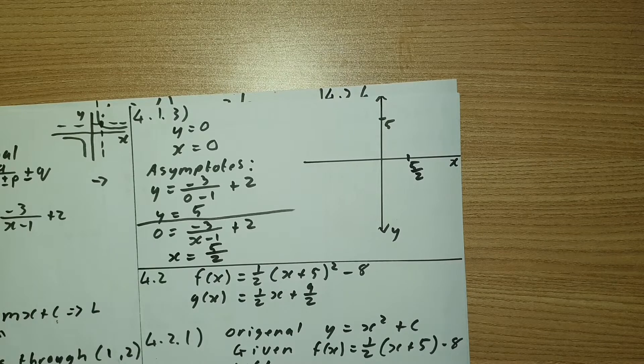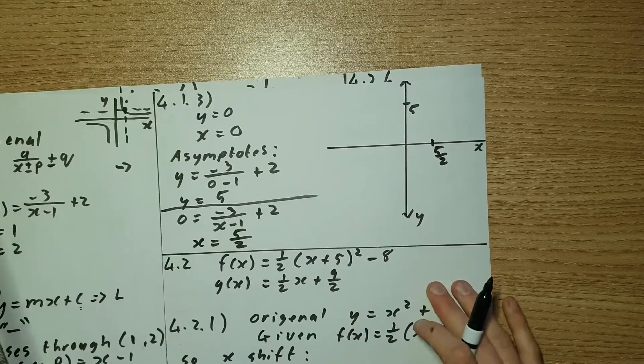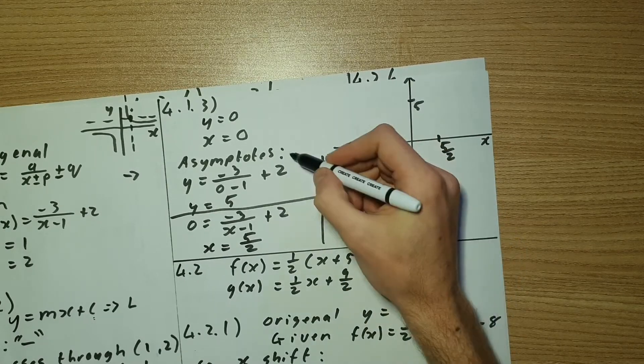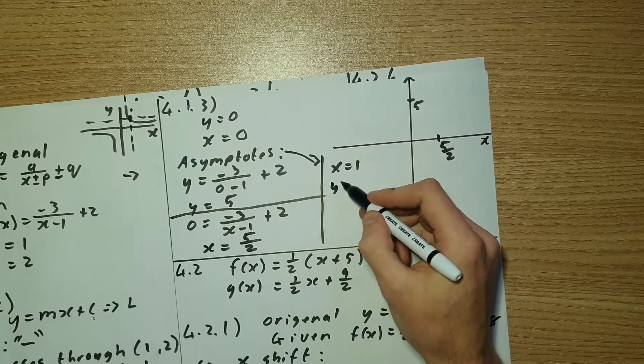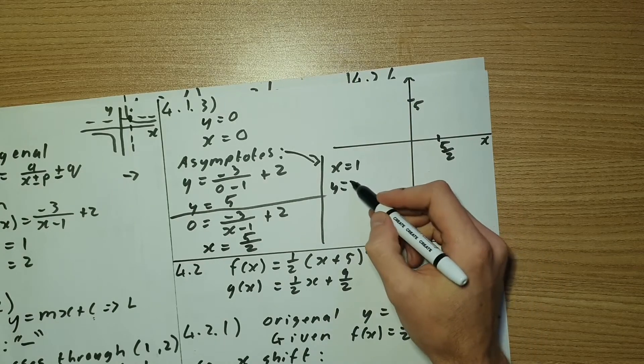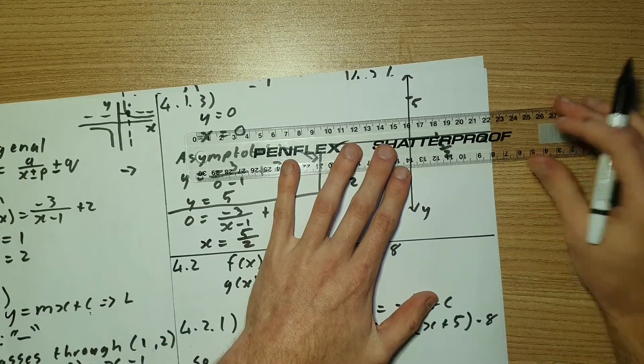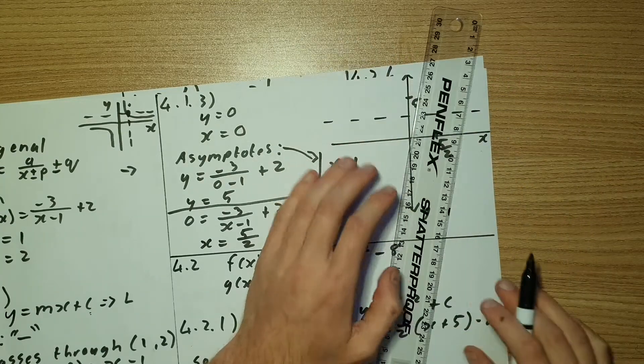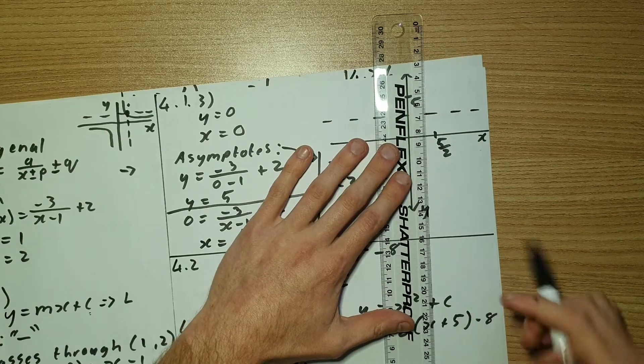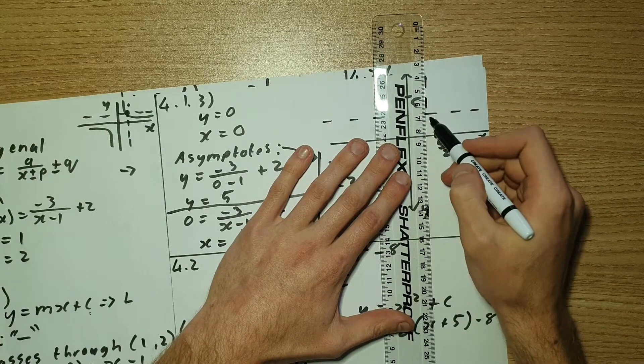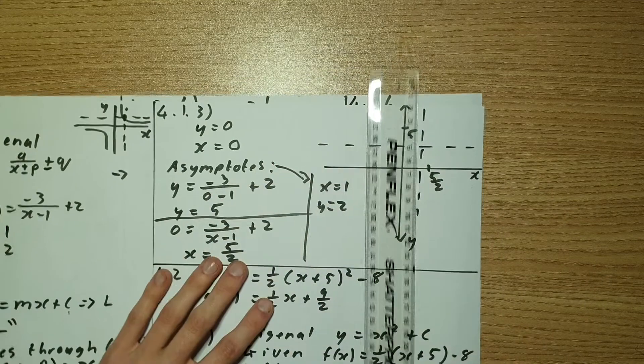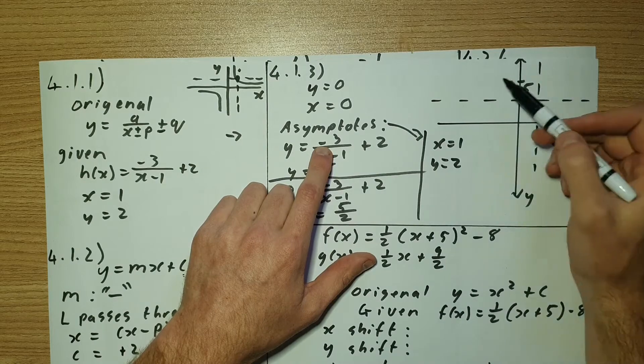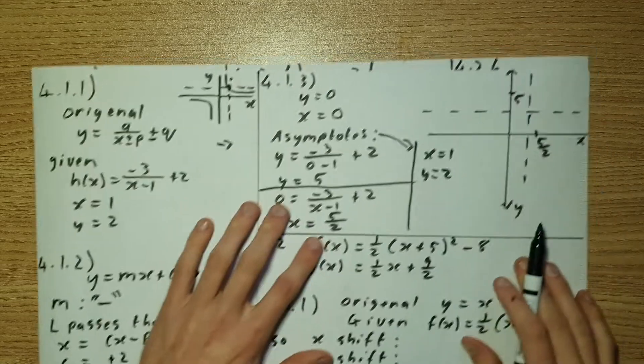Then we have to do our asymptotes. So our asymptotes we said was at x equals to 1 and y equal to 2. So that's, let's say, is roughly here for y equal to 2. And x equals to 1 is less than 5 over 2. So I'm going to draw it roughly here.